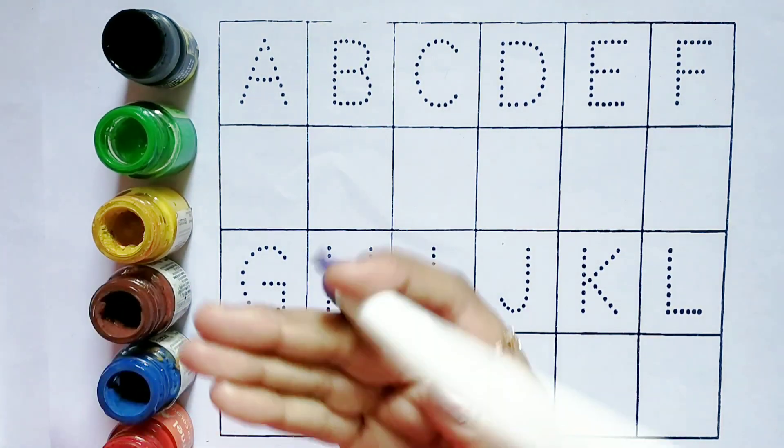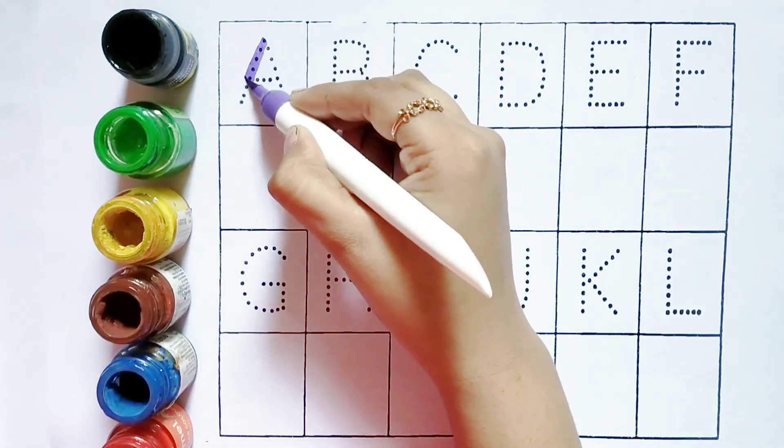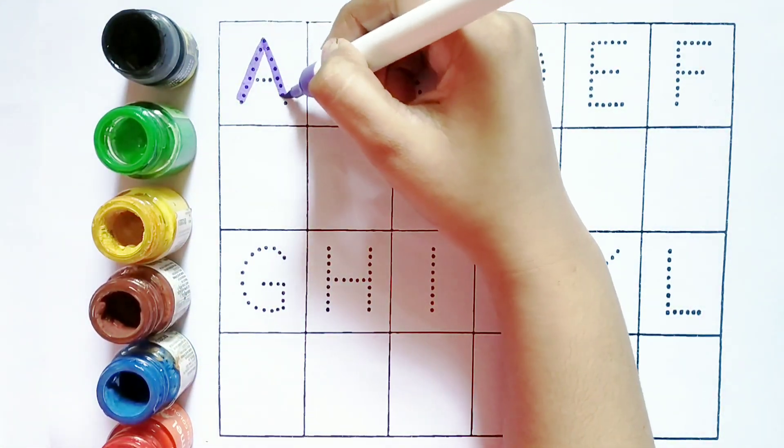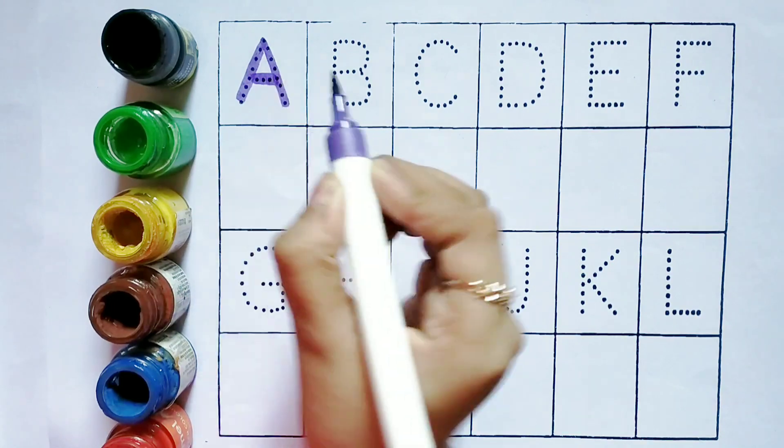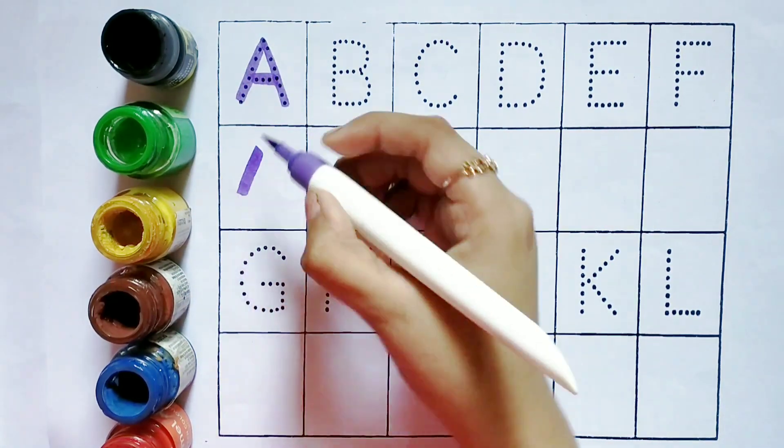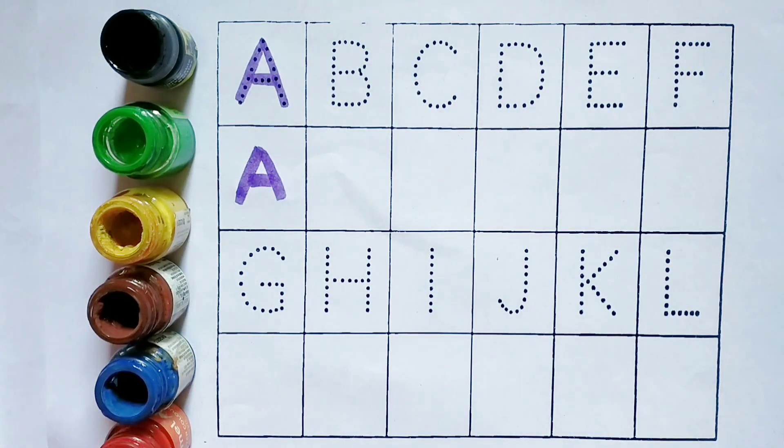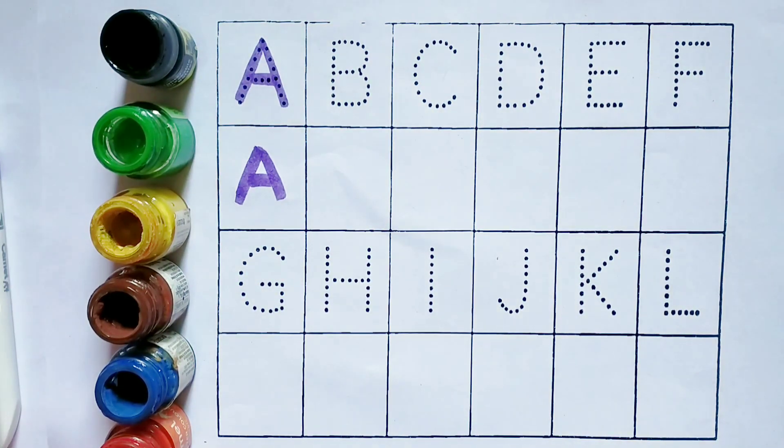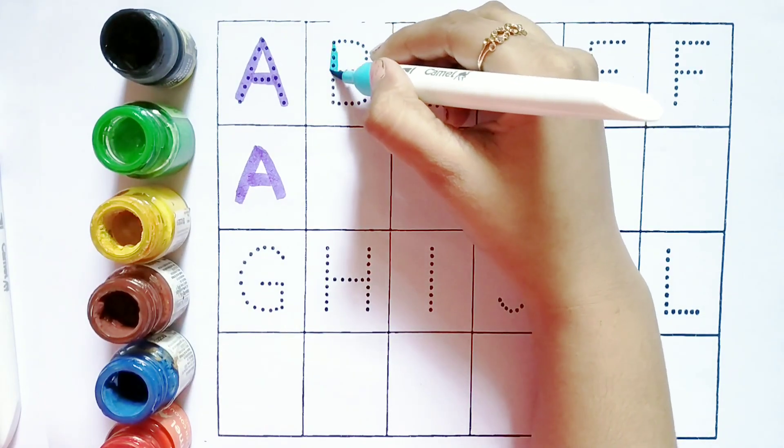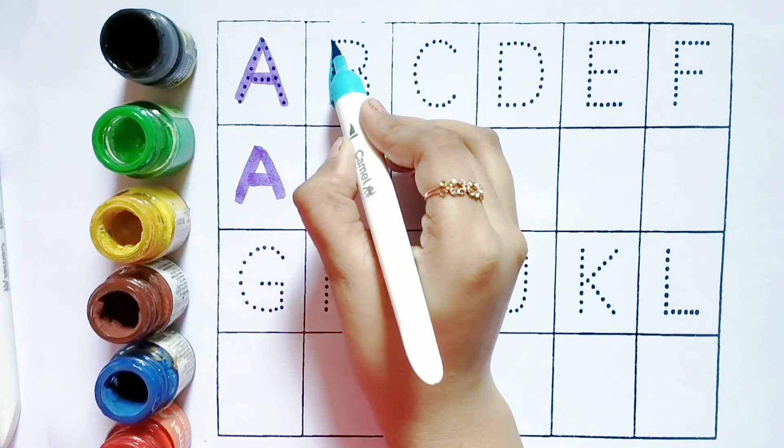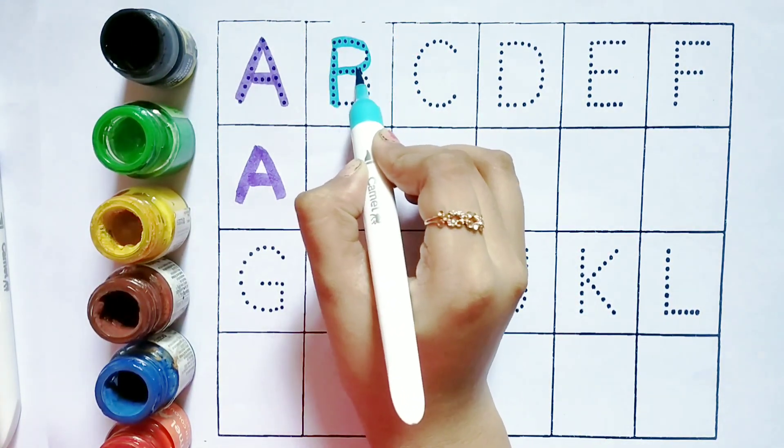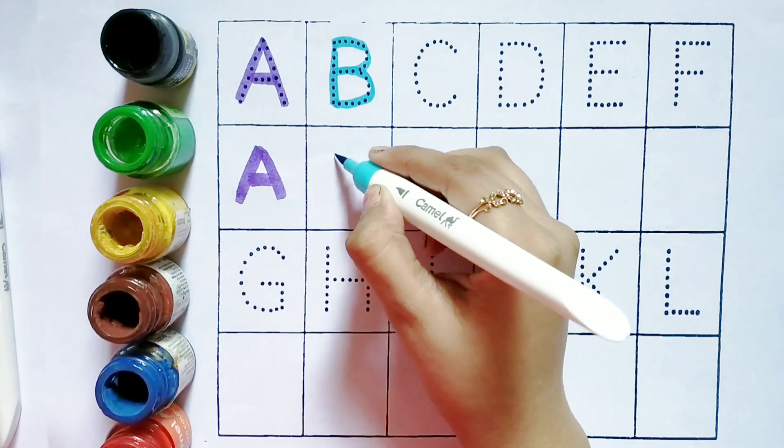Alphabets. A, A for aeroplane. A for aeroplane. A, A for aeroplane. B, B for butterfly. B, B for butterfly.